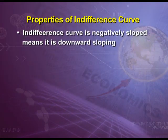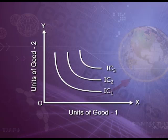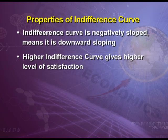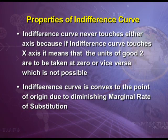Properties of indifference curve: first, indifference curve is negatively sloped, meaning it is downward sloping. This indicates that if we want to increase units of good 1 — as we see 1, 2, 3, 4 — it is necessary to reduce the units of the other commodity, that is good 2. Only then do the different combinations of good 1 and good 2 give the same level of satisfaction. Second property: a higher indifference curve gives a higher level of satisfaction. Third property: indifference curve can never touch either axis, because if it touches the x-axis it means units of good 2 are 0, or vice versa, which is not possible. Fourth property: indifference curve is convex to the point of origin due to diminishing marginal rate of substitution.